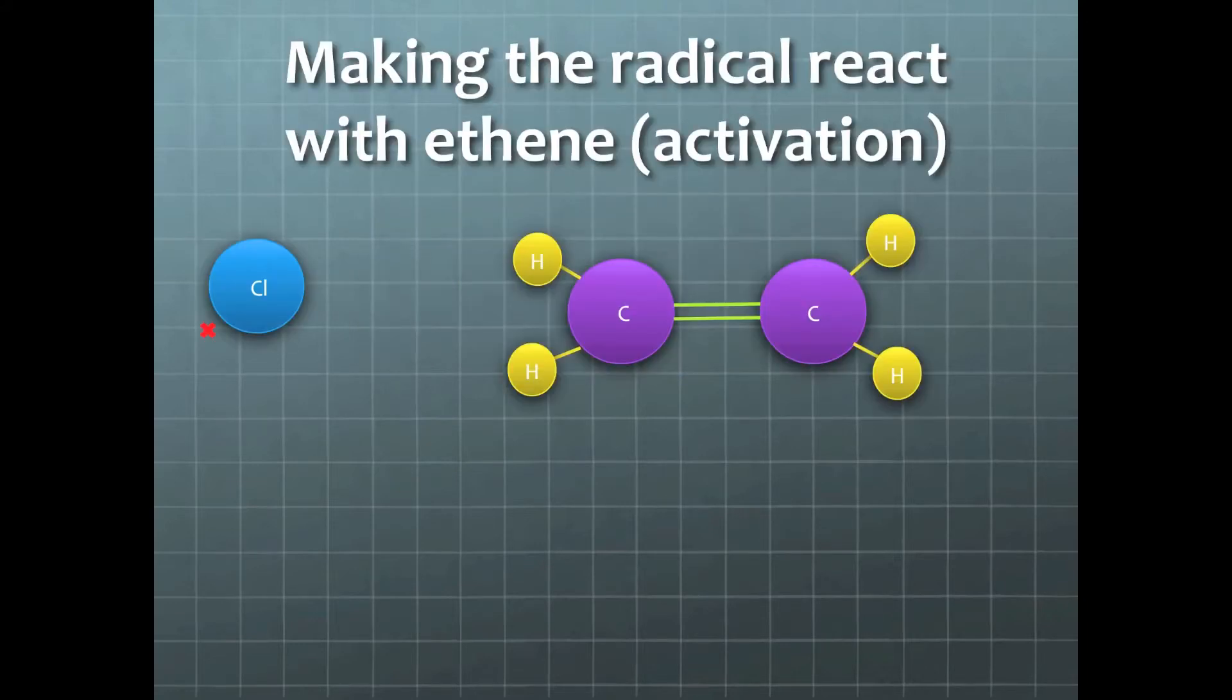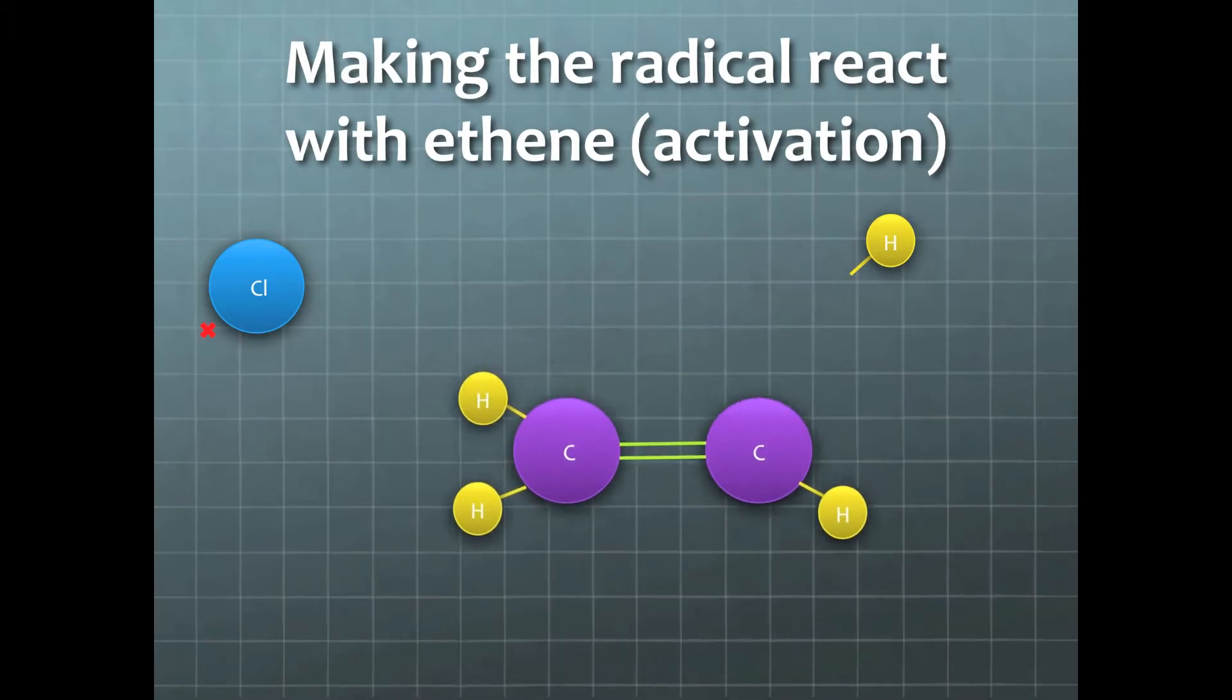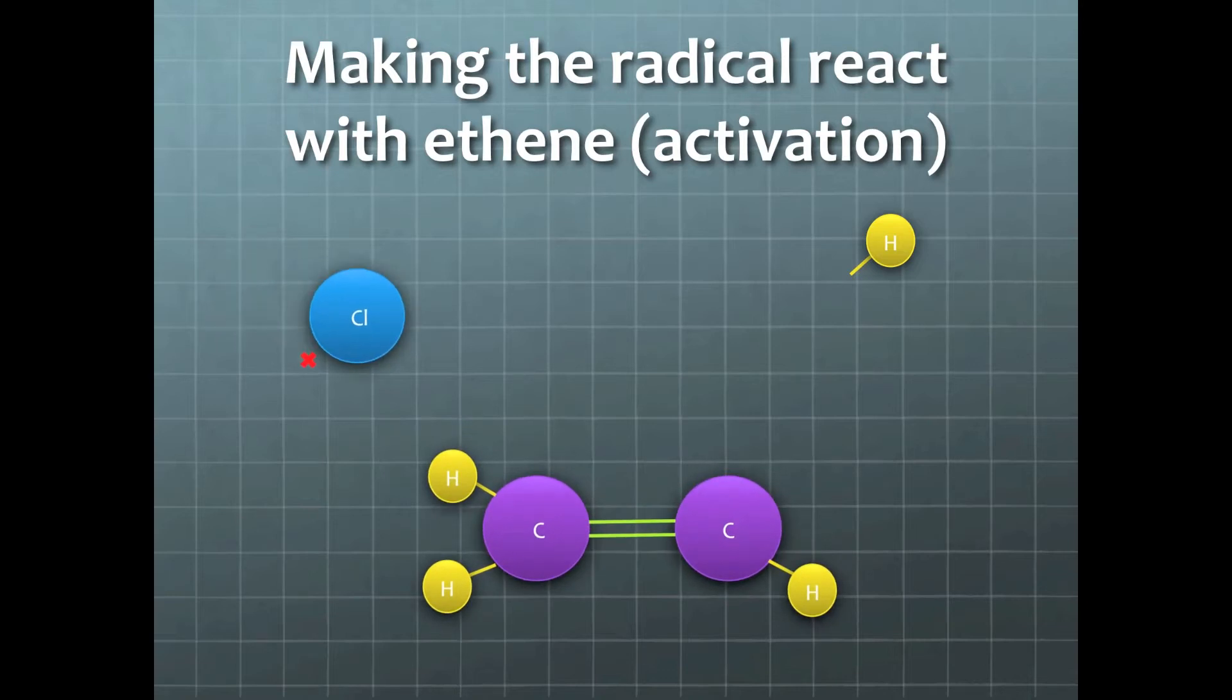When these radicals come into contact with an ethylene, they add themselves to the hydrocarbon in the hydrogen's position. This allows the chlorine to lose its radical and be stable, hence forming a bond. This stage is called activation because it's activating the process of polymerization.